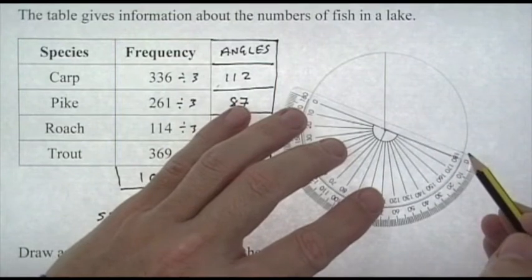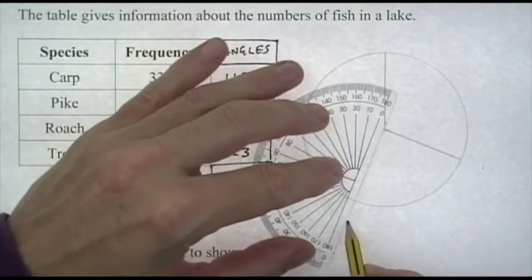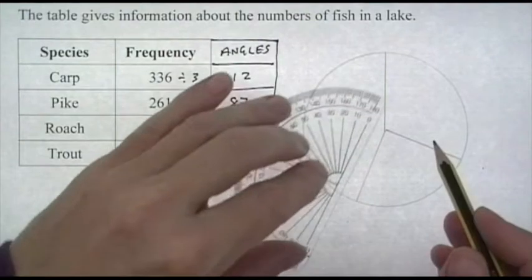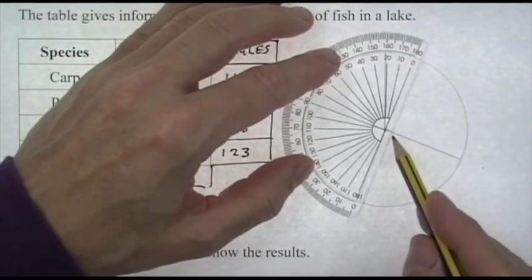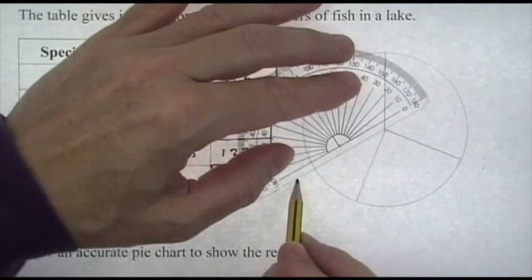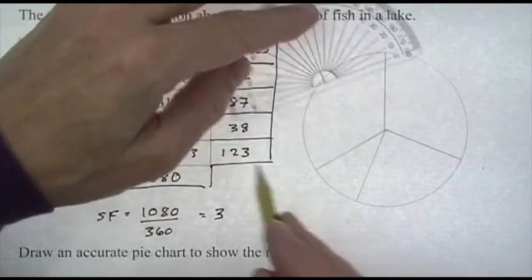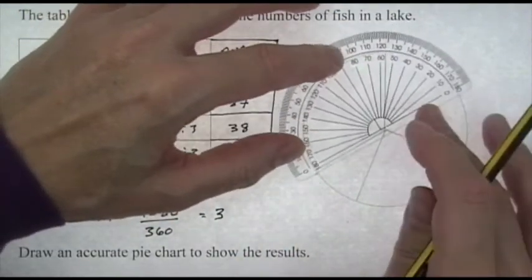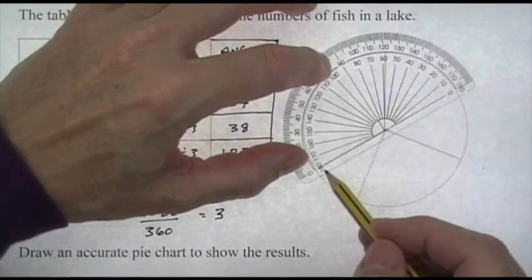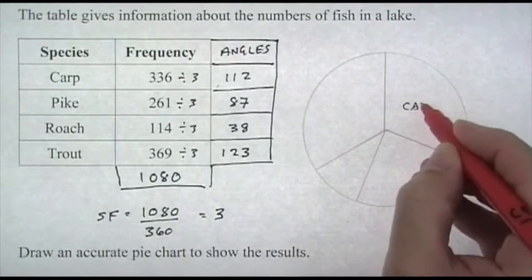Next angle is 38, so measure—center of the protractor, center of the circle, go around 38. Carefully draw your line. That's our four segments. The last one should be 123. We'll measure it just to check, and yes, it's 123, so I've done this very accurately. Just label it. If you want, it is common practice to put the frequencies in there as well.